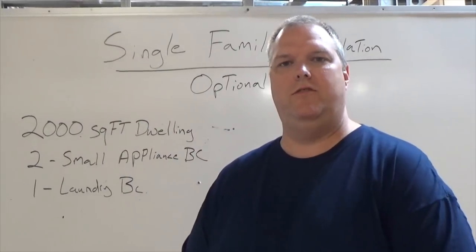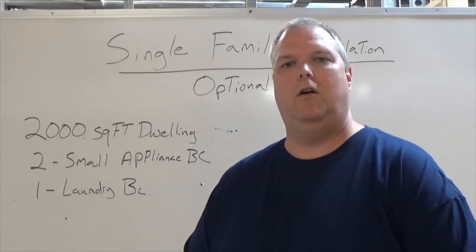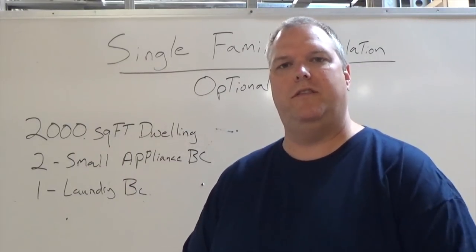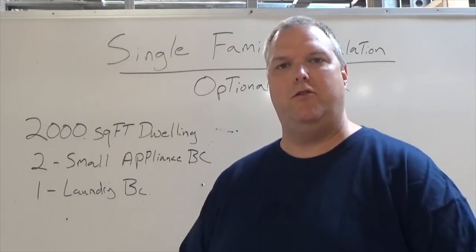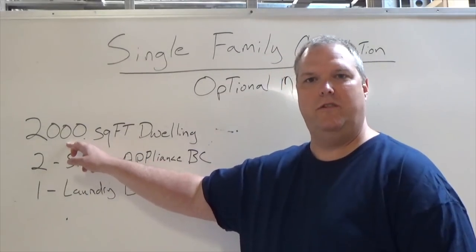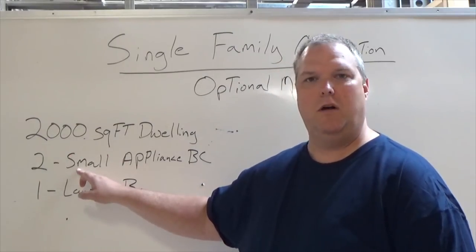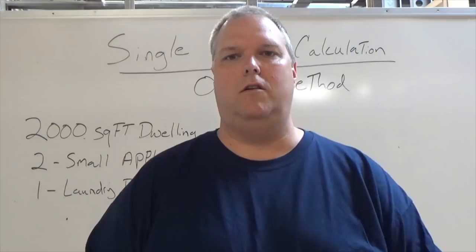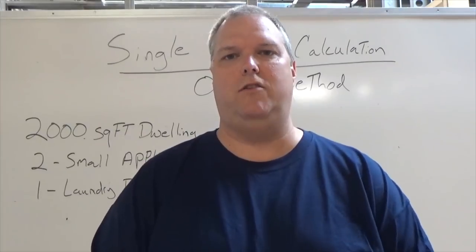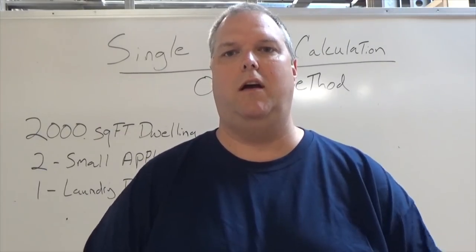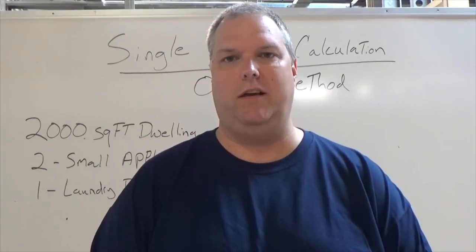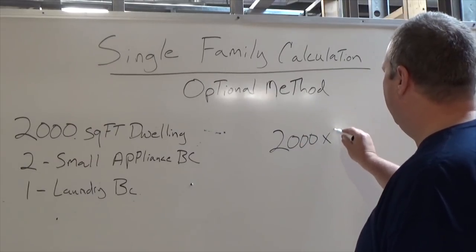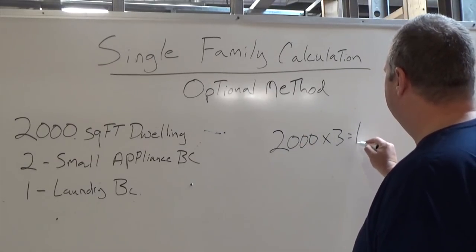The first step is the same as we would use in the standard method. The three most important things we have to know — whether doing standard or optional — are: the total square footage of the dwelling, how many small appliance branch circuits we're installing, and how many laundry circuits we're installing. Using the multiplier from NEC table 220.12, we multiply the single-family dwelling square footage — 2,000 — by three, which gives us 6,000 VA.